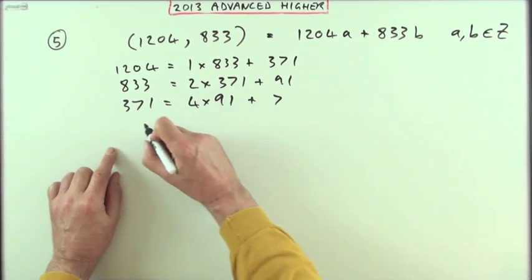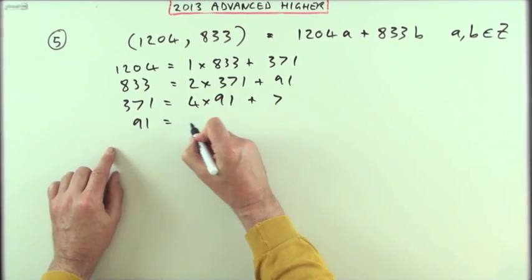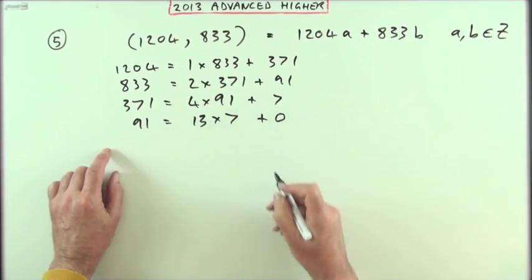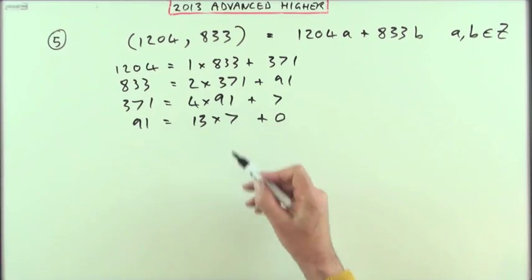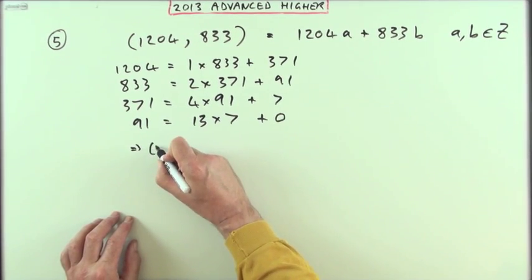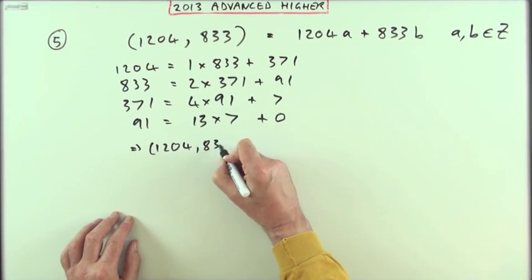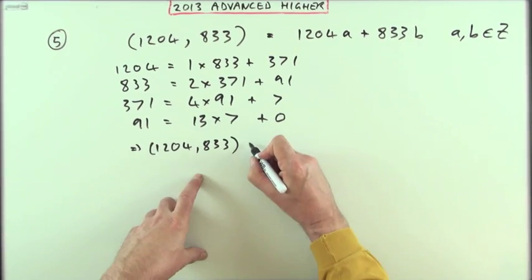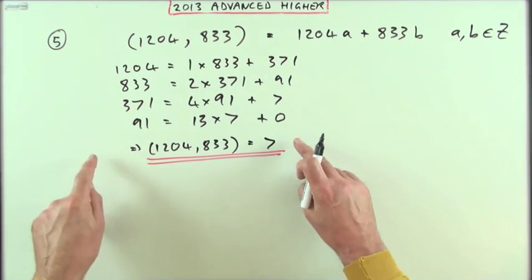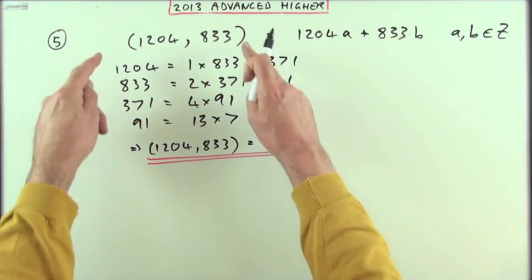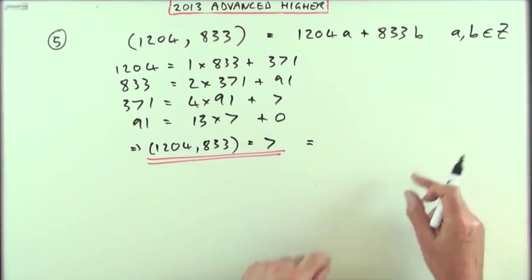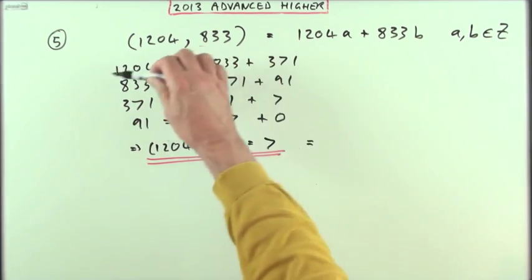Now these two hold it, so 91 equals exactly 13 times 7, which means 7 went into them both. So 7 is the greatest common divisor — GCD(1204, 833) = 7. Now I'm going to walk this backwards. I want to express the greatest common divisor as this linear combination, so here it is: 7 equals...